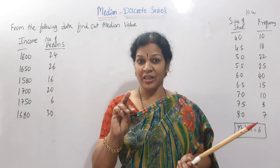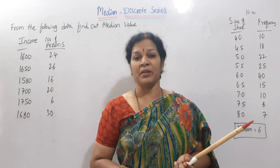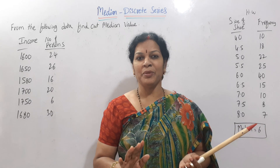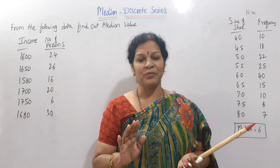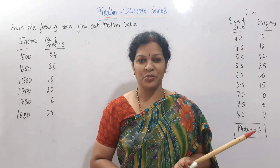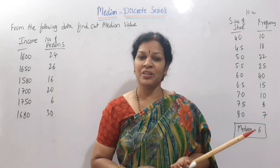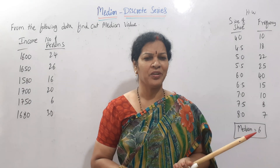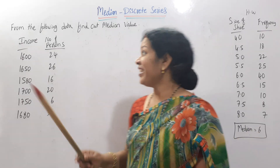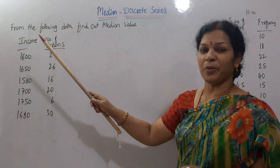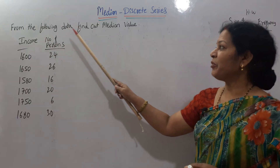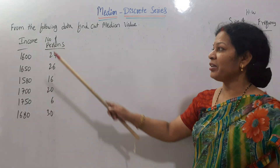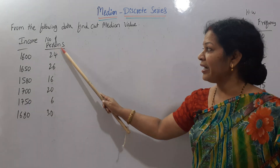So the three steps are: first, arrange data in ascending order; second, prepare cumulative frequency; and third, apply the same formula. No confusion — I'll work out one problem, and I'll also give you one problem as homework, so it will be easy for you to understand. Focus for a few minutes.